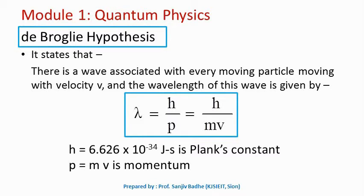De Broglie took the same idea — he said if dual nature exists for light, then dual nature must exist for all types of matter, because nature is symmetric. If one phenomenon is applicable to a certain type of matter, the same phenomenon should be applicable to all types of matter. He stated his hypothesis: there is a wave associated with every moving particle moving with velocity v, and the wavelength of this wave is given by λ = h/p, that is h/mv, where m is the mass of the particle, v is the velocity, and h is Planck's constant.